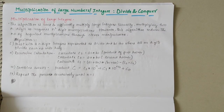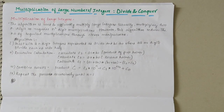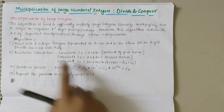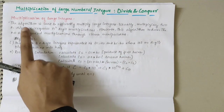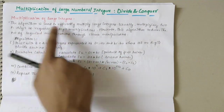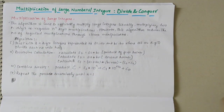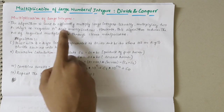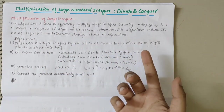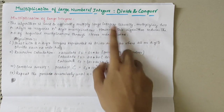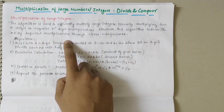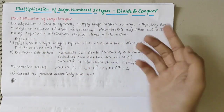In this video we will be looking into multiplication of large numbers or integers using the divide and conquer technique. The algorithm is used to efficiently multiply large integers. Usually multiplying two n-digit numbers requires n-squared digit multiplications, but this algorithm reduces the number of required multiplications through clever manipulation.